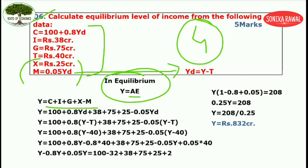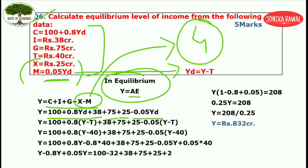Write the consumption function as 100 plus 0.8 Yd, plus investment given as 38, government expenditure 75, exports given as 25, and imports given as 0.05 Yd. Students, note the question carefully — many students write 0.5 instead of 0.05 and get a wrong answer. Now substitute Yd as Y minus T wherever it appears — both in the consumption function and the import function — and put T equal to 40.